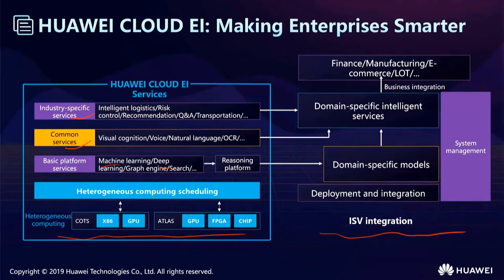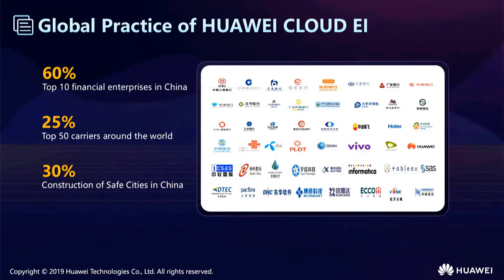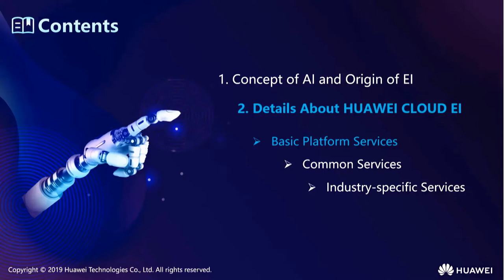On the left side, they have systems management, first deployment, and integrations. They use domain-specific models to analyze data, and they support financing, monetization, e-commerce, and IoT to provide many solutions. Huawei's Cloud AI has many partners all over the world. The top 10 financial enterprises in China use Huawei Cloud AI, and 16% of international enterprises in China use Huawei Cloud AI. The global top 15 telecom operators have used Huawei Cloud AI, and Chinese Safe Cities projects also use Huawei Cloud AI.